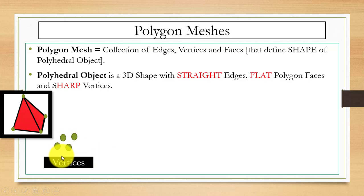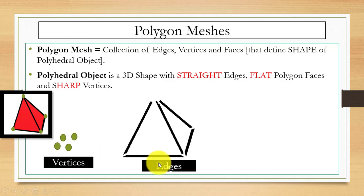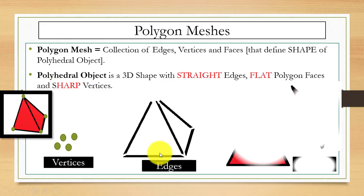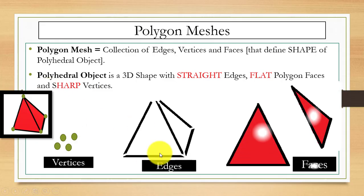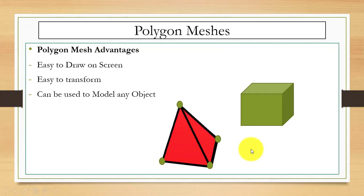Now we will identify the vertices, edges, and faces for this polygon. These are the vertices, these are its edges, and these are its faces.